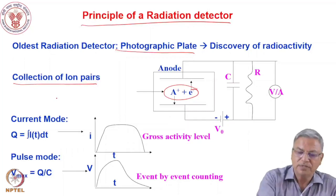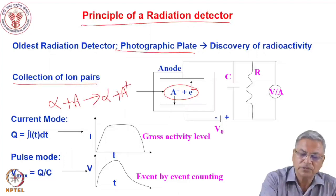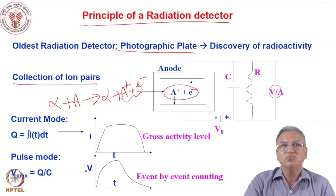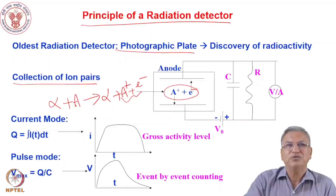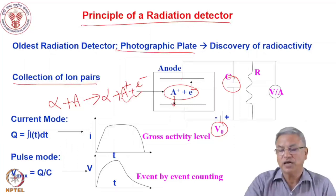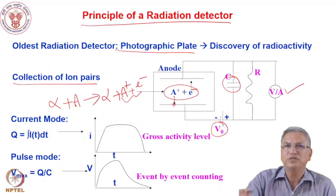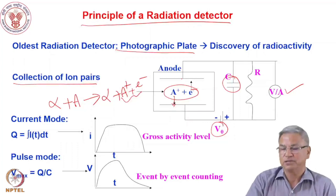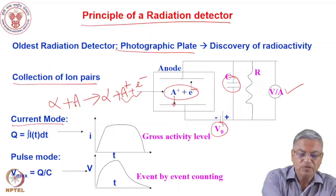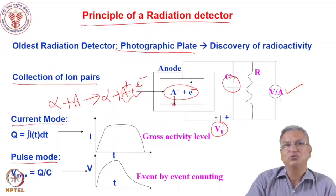The net result of all types of interactions of ionizing radiation is the production of ion pairs. Suppose an alpha particle interacts with atom A: the alpha plus A gives an ionized atom and a free electron. If you collect this electron and positive ion at their respective electrodes, you can collect the signal. Electrons are collected at the anode and positive ions at the cathode by applying a potential, essentially charging a capacitor, which discharges through a load resistance R. That discharge can be measured as a voltage or a current. We will discuss both mechanisms and their merits and demerits.